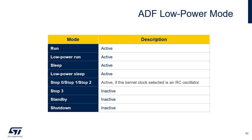ADF can be active in all modes except in Stop 3, Standby, and Shutdown modes. In Stop mode, the ADF register's content is kept. In the Stop 0, Stop 1, and Stop 2 modes, ADF supports the Low Power Background Autonomous mode or LP BAM. In Standby mode, ADF is powered down and must be reinitialized after exiting Standby mode.